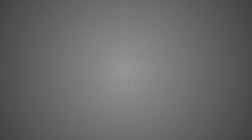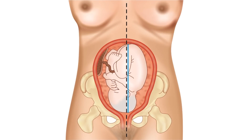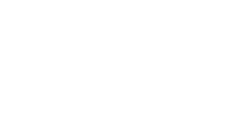The fetal lie can be described as longitudinal when the maternal and fetal long axes are parallel to each other. The fetus can be in longitudinal lie either in cephalic position or in breech position.